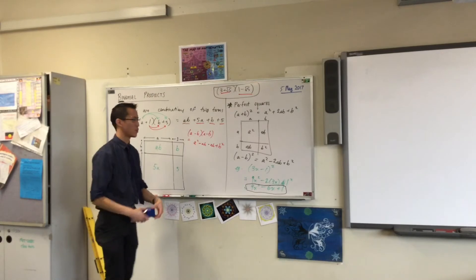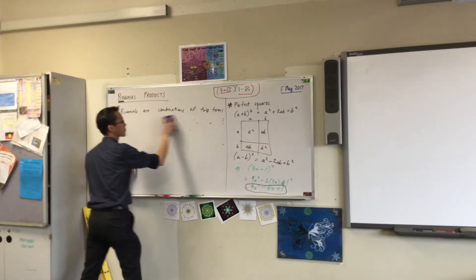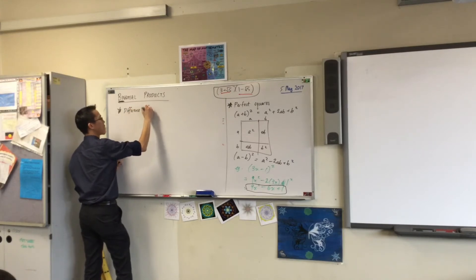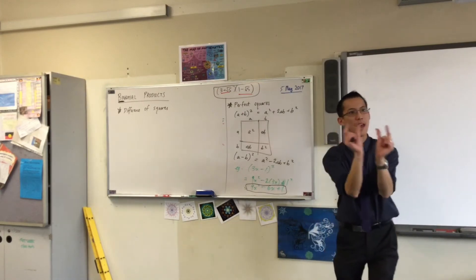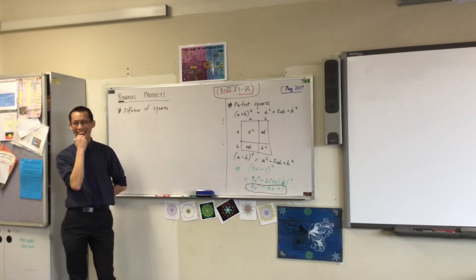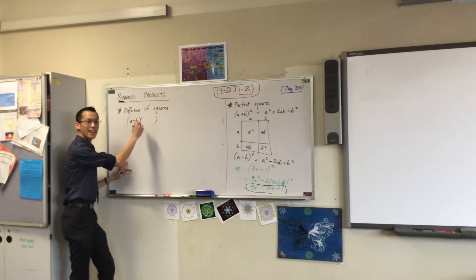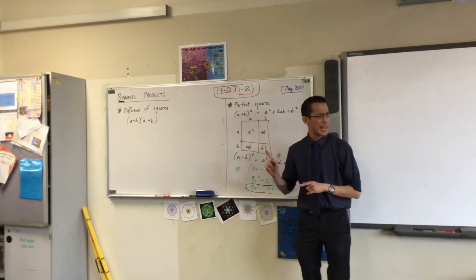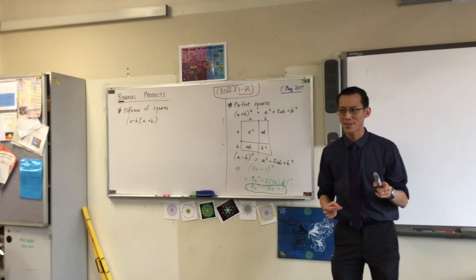Underneath perfect squares, I want you to write — anyone want to guess? It's another kind of binomial: difference of squares. The way it's usually written is a minus b and a plus b. By the way, we learned a fancy name for these before — do you remember when you've got the same pieces but they're different by a sign in the middle? They're called conjugates. Remember that?